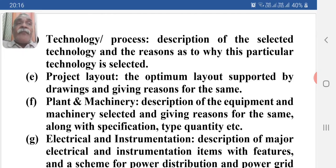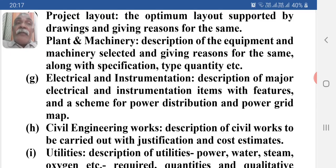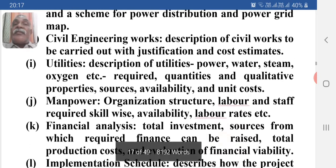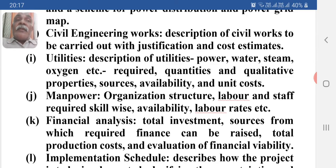Further documentation covers: project layout — the optimum layout supported by drawings with reasons; plant and machinery — descriptions of equipment selected with specifications, types, and quantities; electrical and instrumentation — descriptions of major electrical and instrumentation items with a power distribution scheme; civil engineering works — description of civil works with justification and cost estimation; and utilities — descriptions of utilities such as power, water, steam, oxygen, etc., including quantities, qualitative properties, source availability, and unit costs.